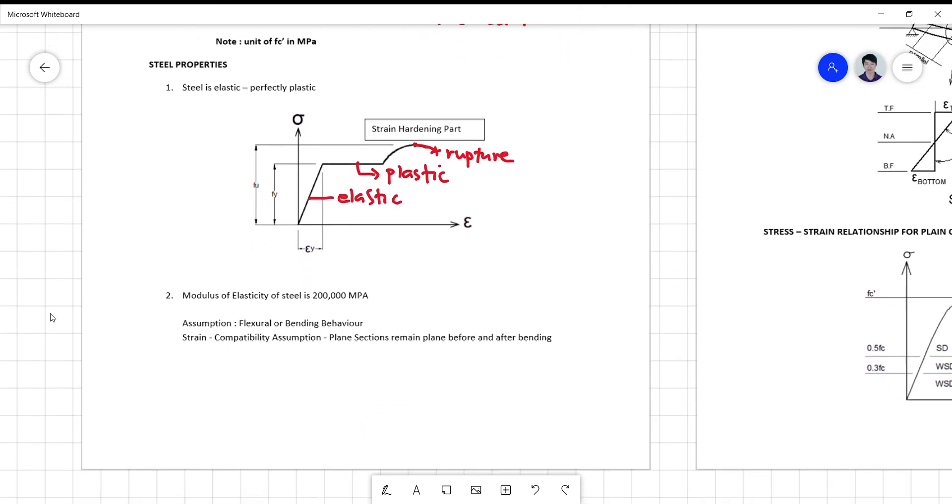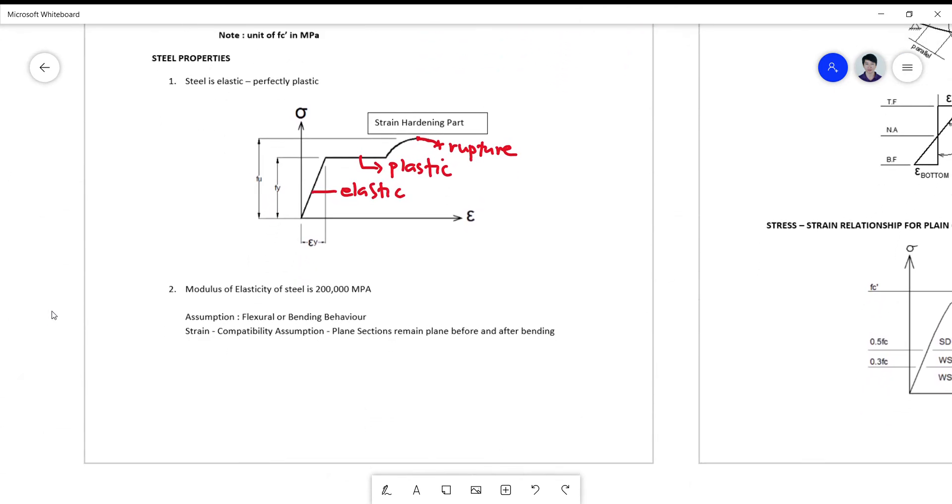For the modulus of elasticity of steel, the equivalent value used is 200,000 megapascals. So this is assumed to be constant even though steel strength fy and fu varies from one steel to the other.